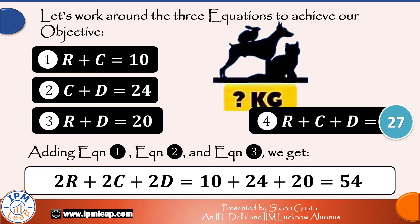Did you realize that's our required answer? The combined weight of rabbit, cat and dog is 27 kgs. The beauty of this approach is that we don't need to find the individual weights of rabbit, cat or dog — we can directly arrive at our answer for the combined weight of the three animals.